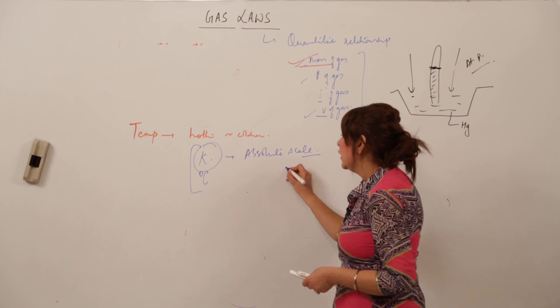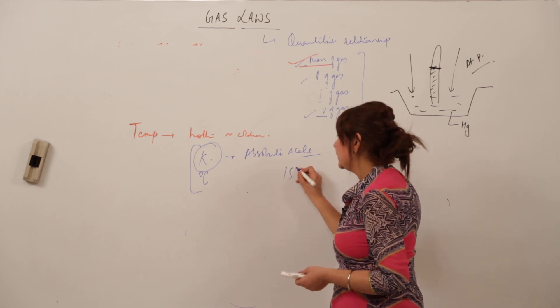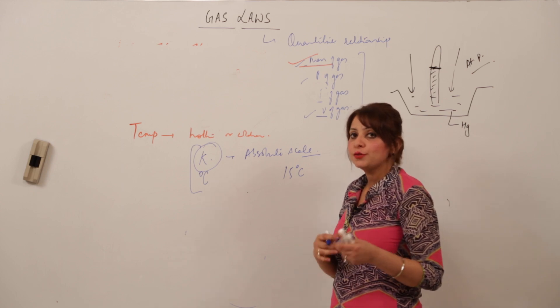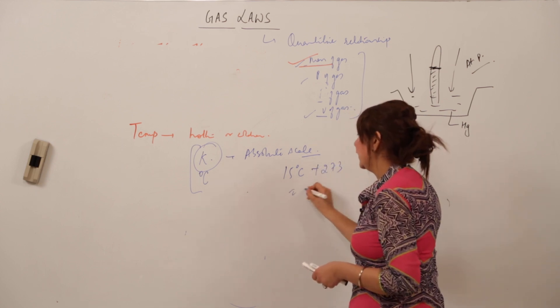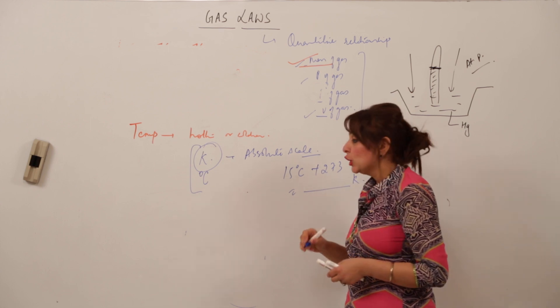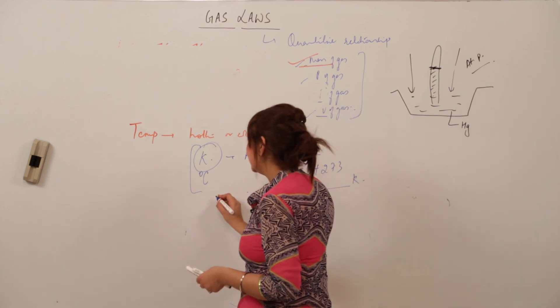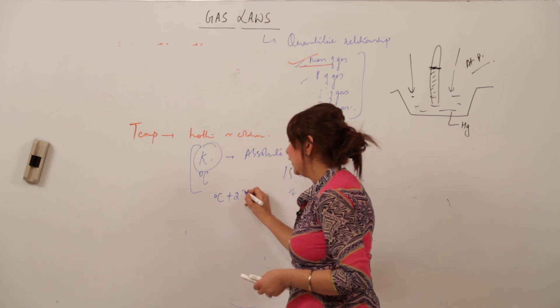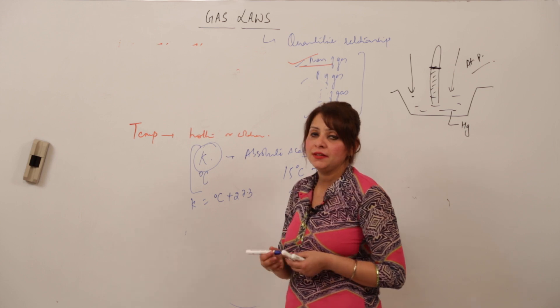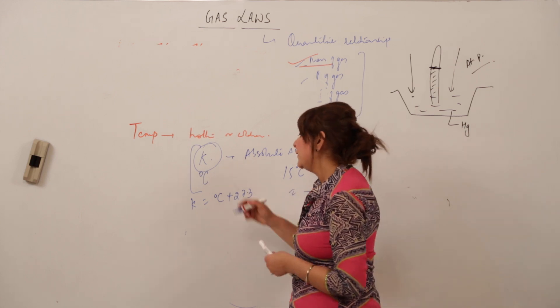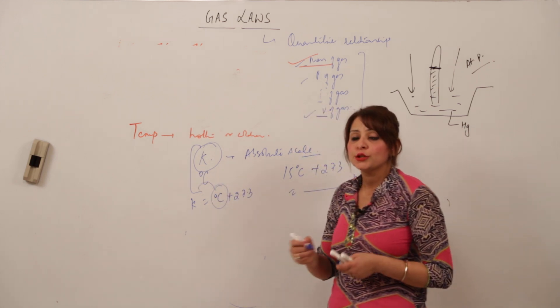So whenever you have a temperature in degree Celsius, like if I say there is a temperature of 15 degrees Celsius and you want to convert it into the Kelvin scale, just add 273 to it and you'll get the result in Kelvin. So that means whenever degree Celsius temperature is to be converted into Kelvin, just add 273 into it.